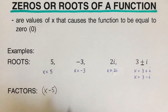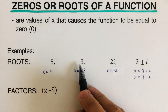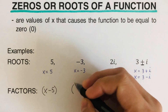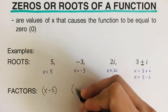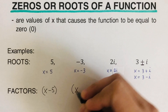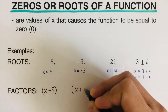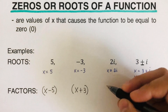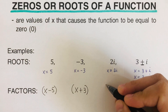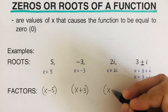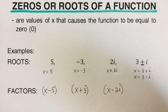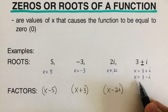In the same way, x = −3 can be written as (x + 3), and x = 2i can be written as (x − 2i).